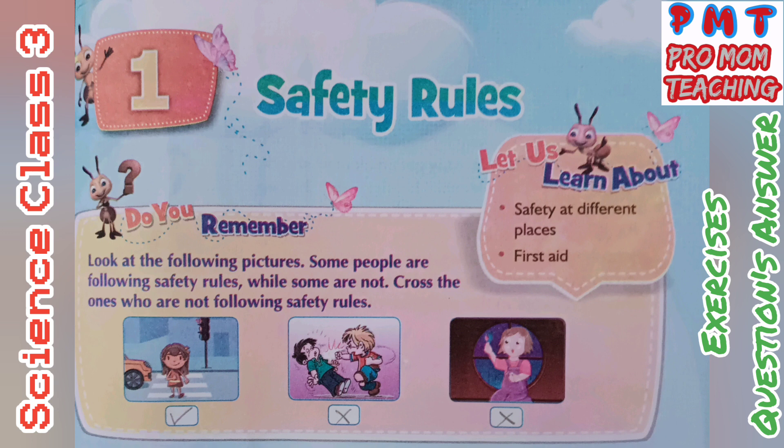Look at the following pictures. Some people are following safety rules while some are not. Cross the ones who are not following safety rules. First, she is crossing the road from zebra lines, so she is following safety rules. Second, cross. Third, cross.